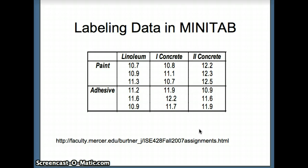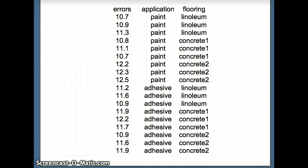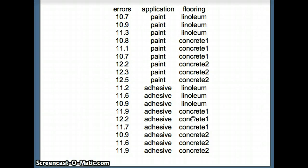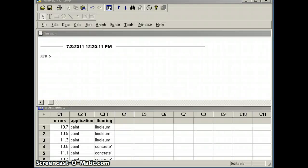Before we can use Minitab to analyze this data, we need to see how to input it. The number 10.7 had a paint application with linoleum flooring, so after 10.7 we put paint in column 2 and linoleum in column 3. Similarly with 10.9 and 11.3 — paint and linoleum. When we get to 10.8, that was paint with concrete 1. Each number of errors is associated with a type of application and a type of flooring. Those numbers are now in Minitab with columns: errors, application, and flooring. Notice the dash-T, which means it's alphanumeric, so Minitab knows how to work with that.